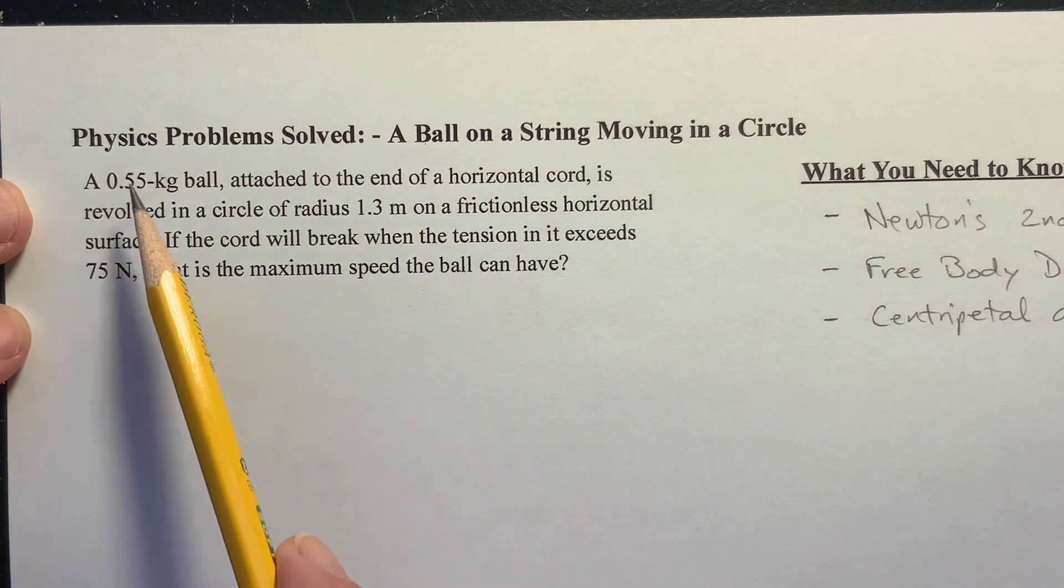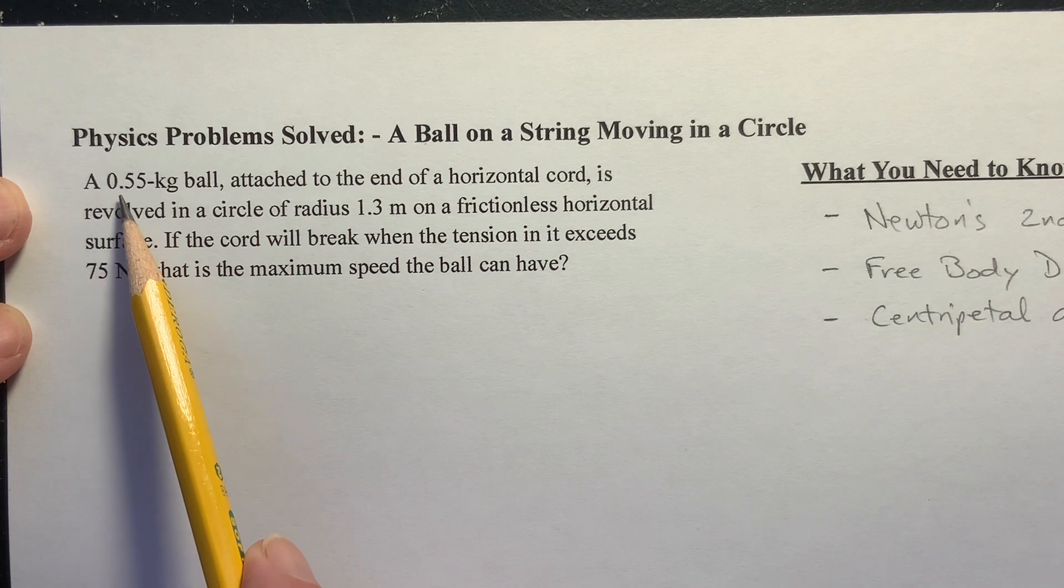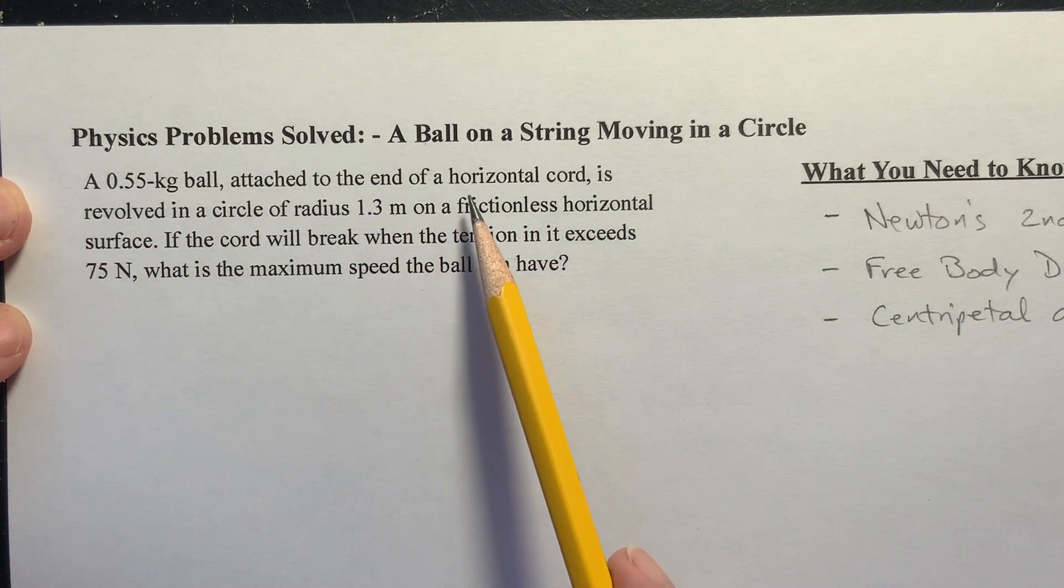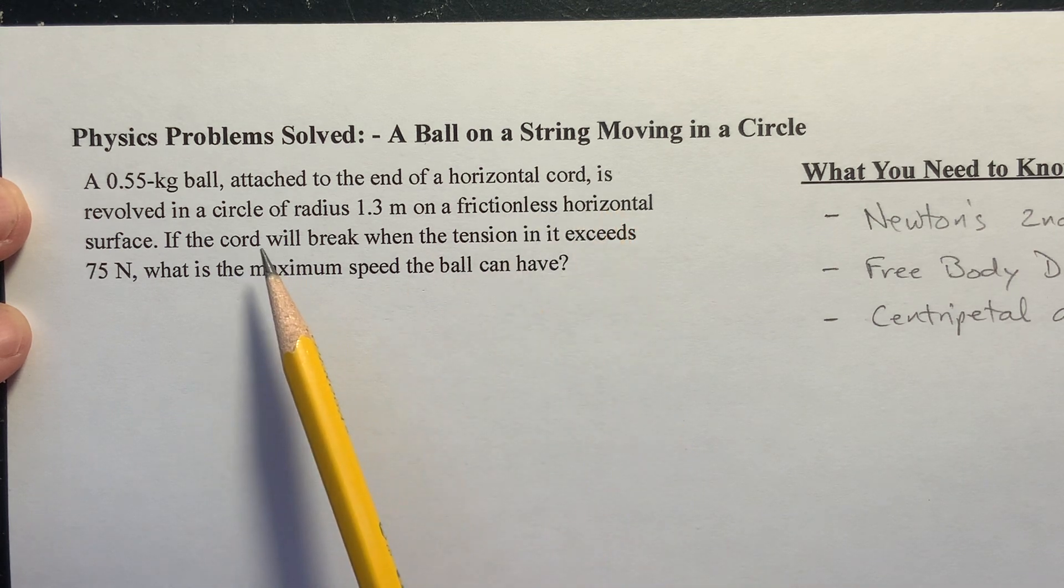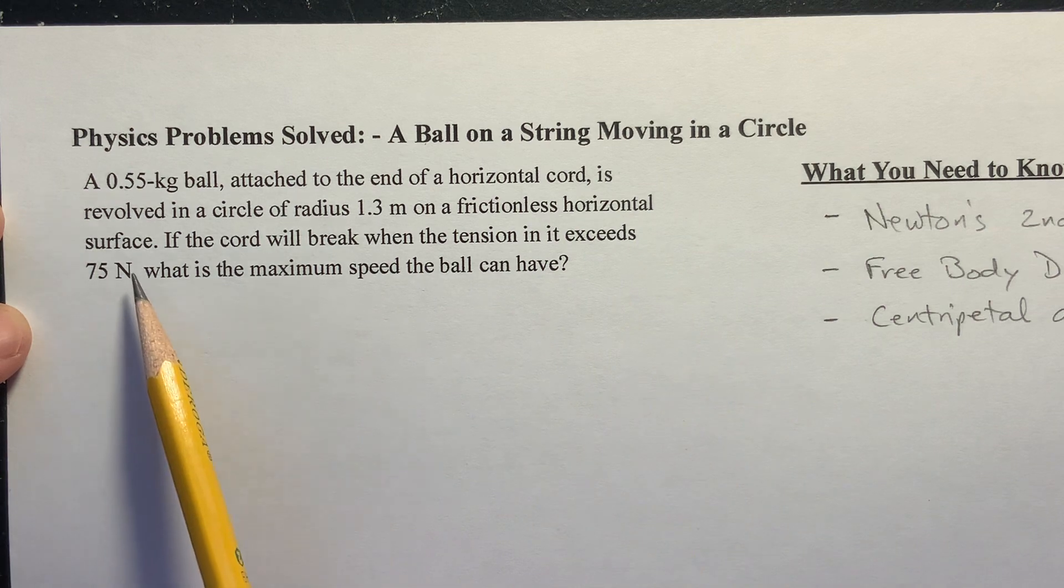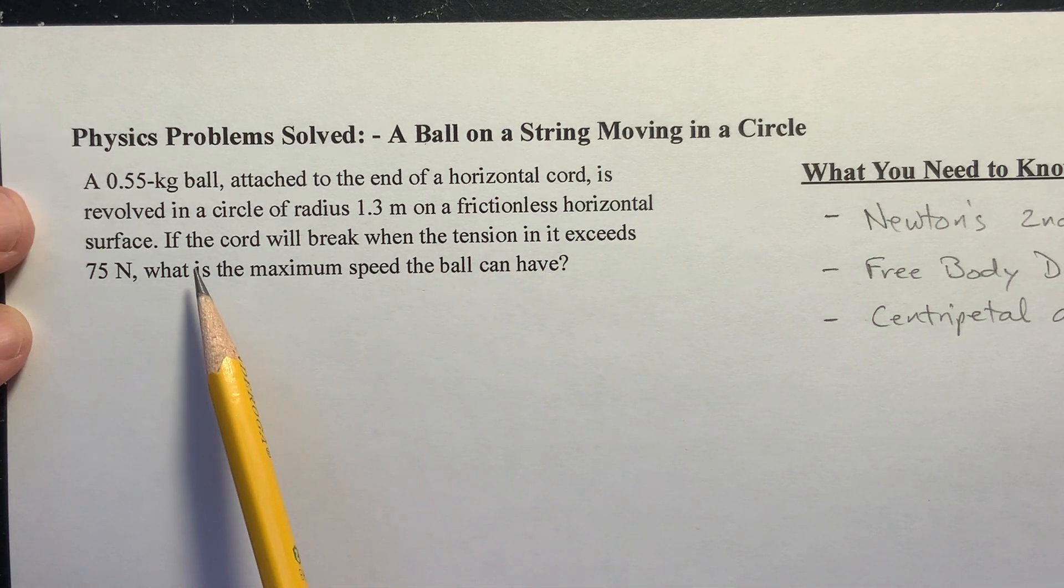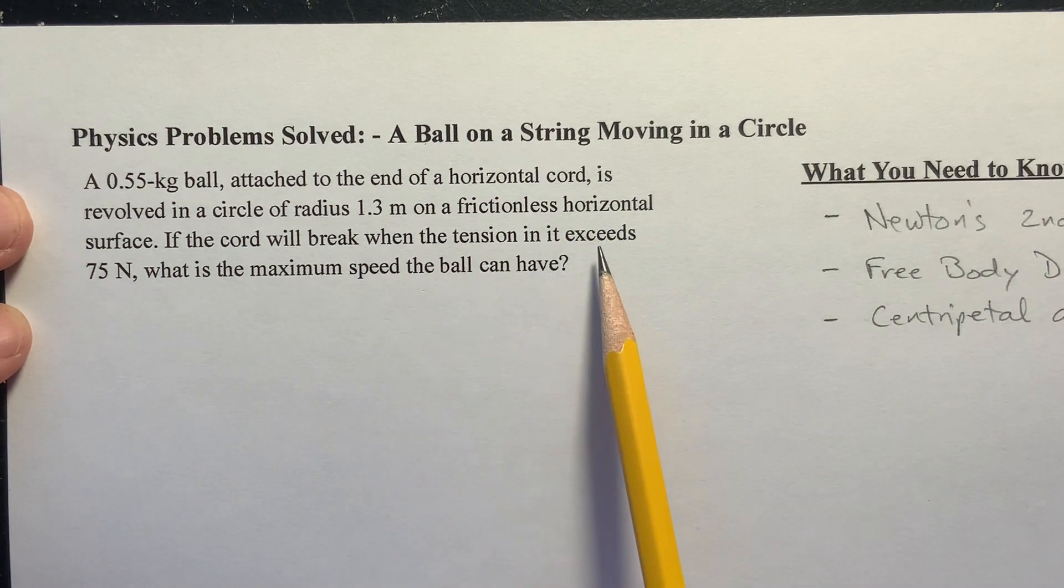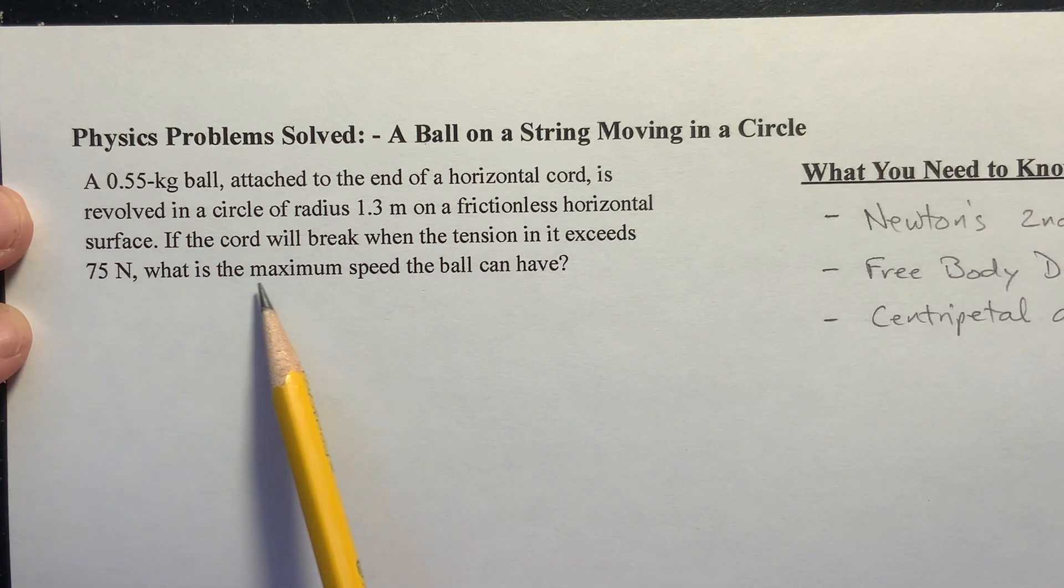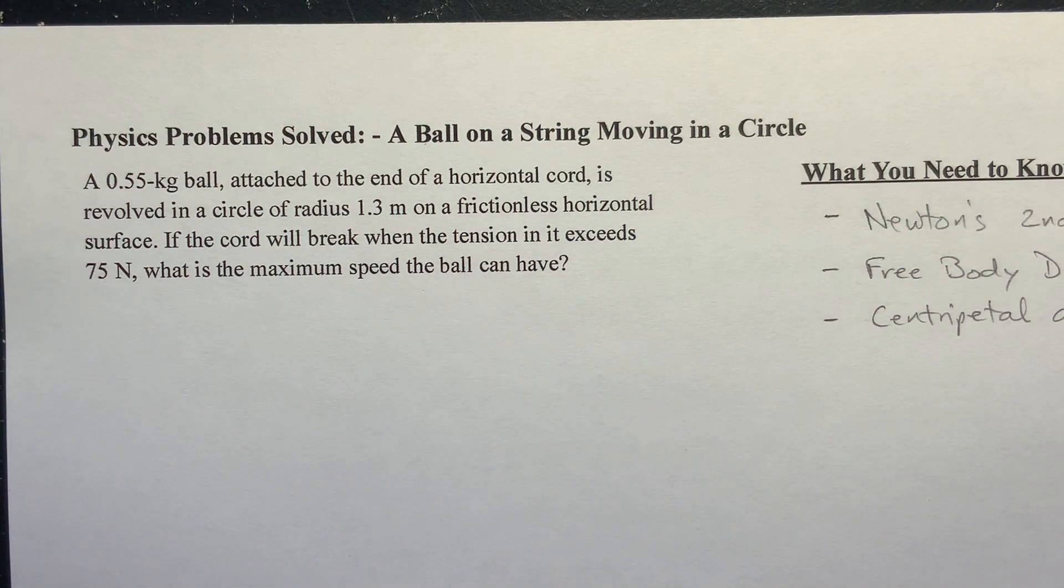We've got a 0.55 kilogram ball attached to the end of a horizontal cord revolved in a circle of radius 1.3 meters on a frictionless horizontal surface. If the cord will break when the tension in it exceeds 75 newtons, what is the maximum speed the ball can have?